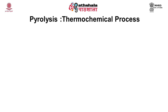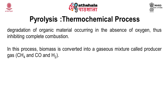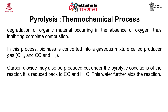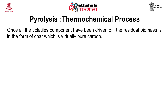The third thermochemical process is pyrolysis, where degradation of organic matter occurs in the absence of oxygen, inhibiting complete combustion. Biomass is converted into a gaseous mixture known as producer gas, which is a combination of methane, carbon monoxide, and hydrogen. Carbon dioxide may also be produced, but under pyrolytic conditions it is reduced back to carbon monoxide and water. Liquid phase products result from temperatures too low to crack all long-chain carbon molecules, resulting in oil, methanol, acetone, and tars. Once all volatile components are driven off, the residual biomass is virtually pure carbon char. The products of pyrolysis are bio oil, char, and gas.